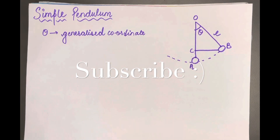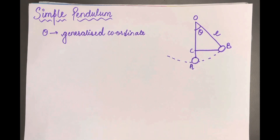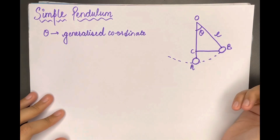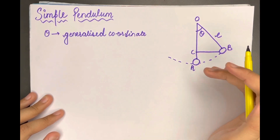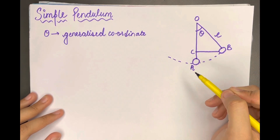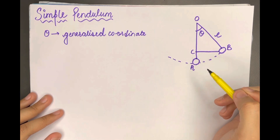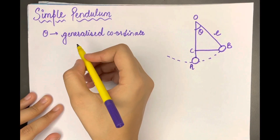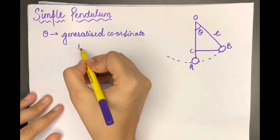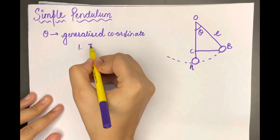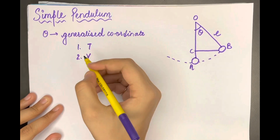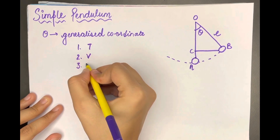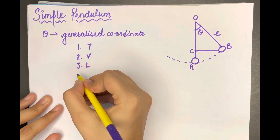Everyone knows what a simple pendulum is. We know the steps to be followed to obtain the equation of motion using Lagrange equations of motion. The first step is to calculate kinetic energy, the second step is to calculate potential energy, and the third step is to calculate L.